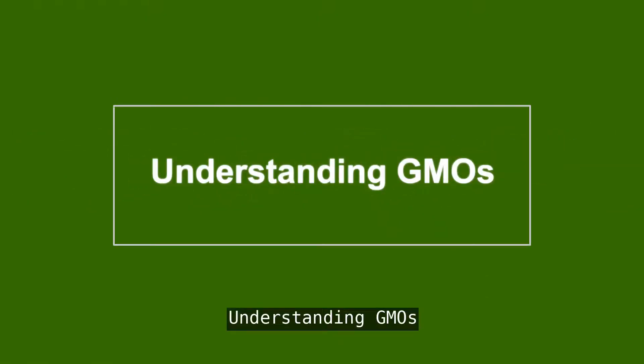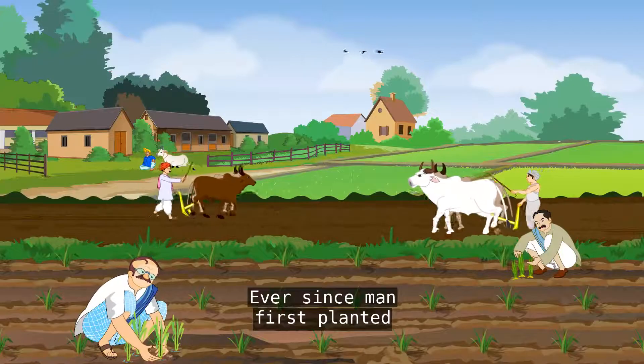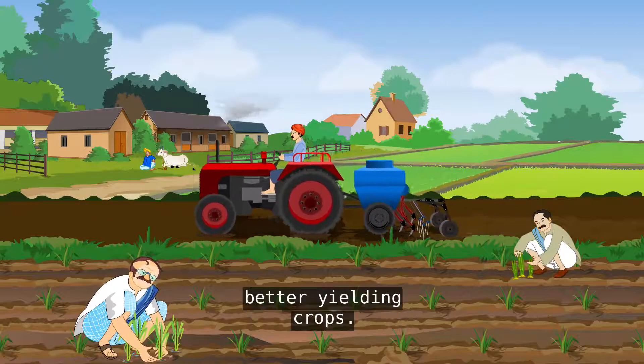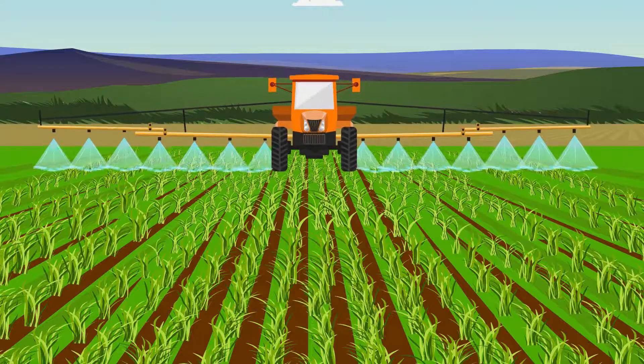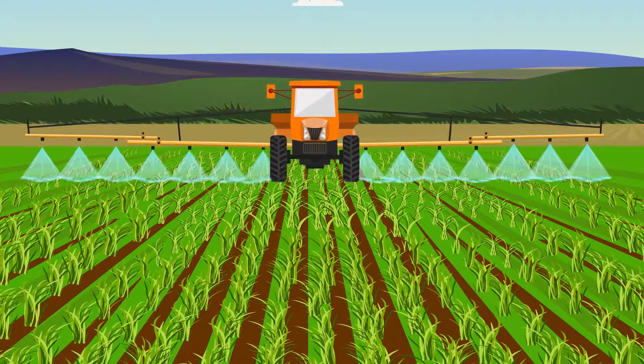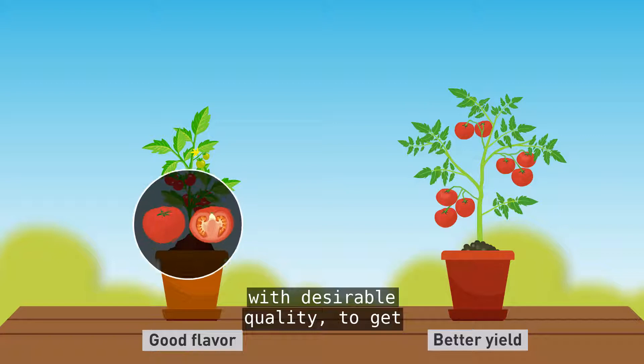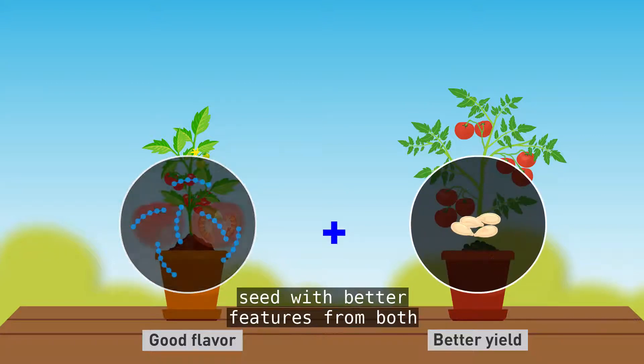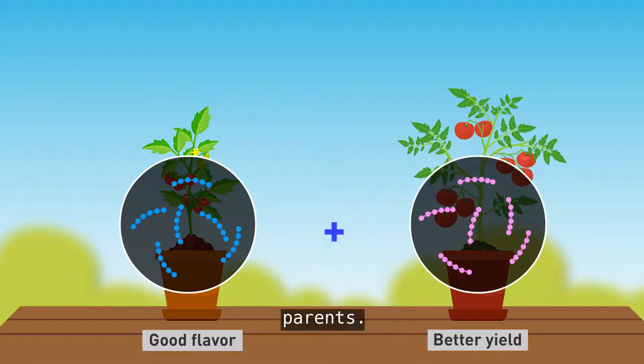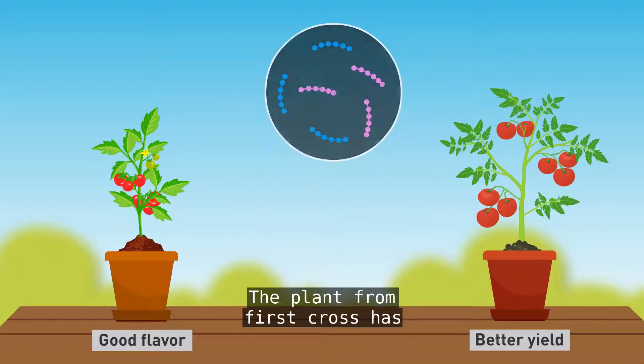Ever since man first planted crops for food, he has been selecting for better-yielding crops. Then he learned to cross crops with desirable qualities to get seeds with better features from both parents.